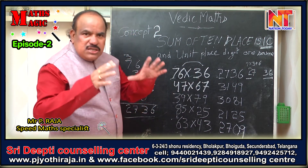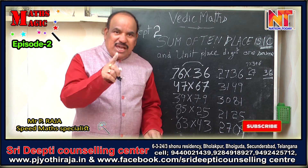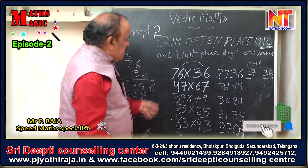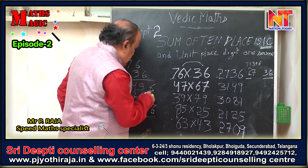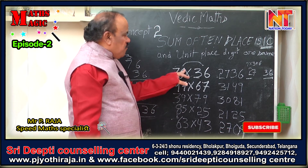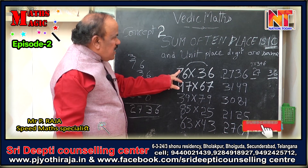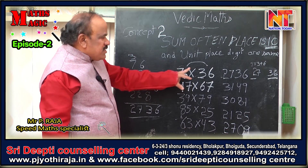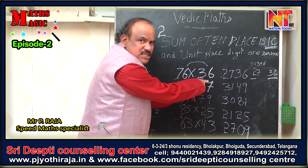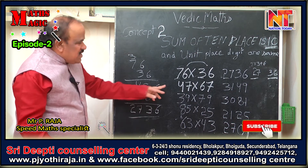The tens-place digits sum to 10, and the unit-place digits must be the same — for example, 6 and 6, 7 and 7, 9 and 9. When this formula is applicable, here is how to do it from left to right: Step 1 — 6 times 6 is 36, put 36. Step 2 — add the tens digits: 7 plus 3 is 10, times 7 is 70... 7 times 3 is 21, and add the unit digit: 21 plus 6 is 27. So the answer is 2736.